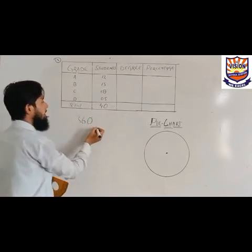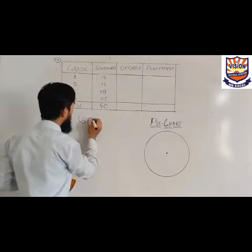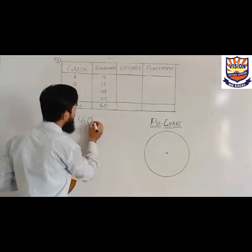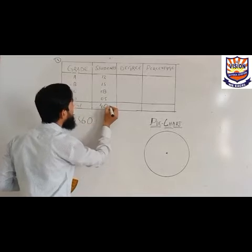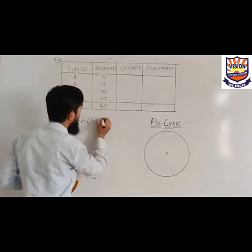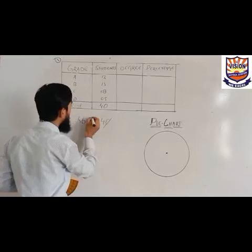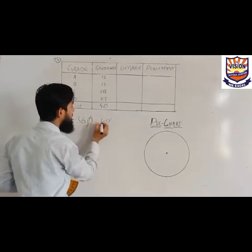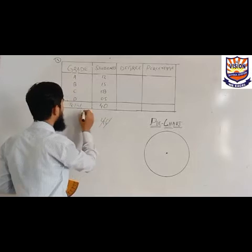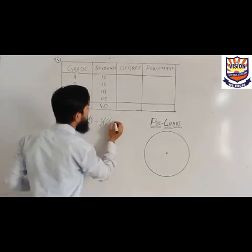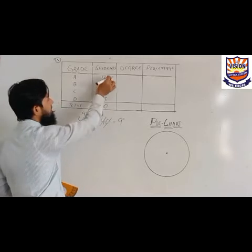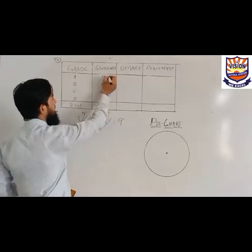Divide 360 by the total number of students. The total number of students is 40. When you divide 360 by 40, this will equal 9 degrees. Now multiply each number of students by 9.